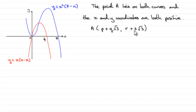So how are we going to do this? Well, clearly A, when you look at the graphs, has to be this point here, because both the x and y coordinates are positive. So let's mark this point as point A — that's what we're looking for.